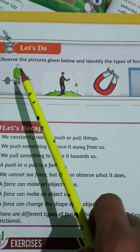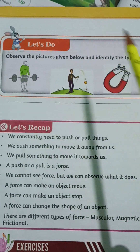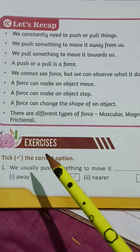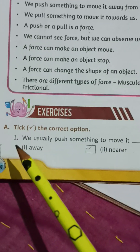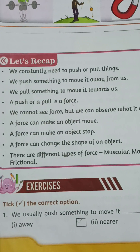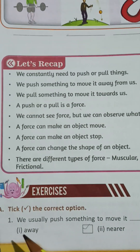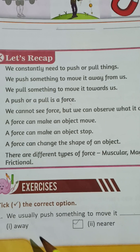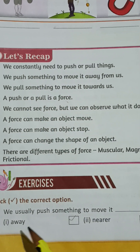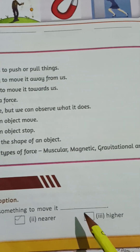There are a few pictorial questions; you have to identify them and give answers in the comment box. Now let's solve the exercises. This is 'tick the correct option.' We usually push something to move it — away. So we push something away to move it.